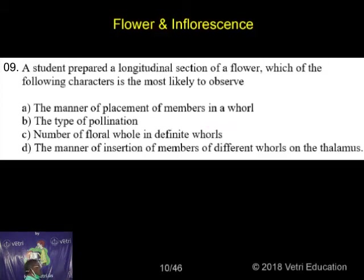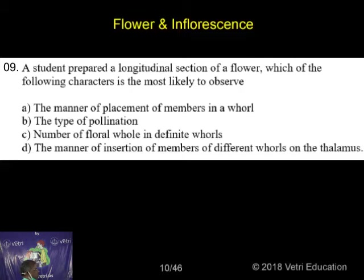A student prepared a longitudinal section of a flower. Which of the following characters is most likely to be observed? The manner of placentation of members in a whorl, the type of pollination, the number of floral whorls in a definite whorl, or the manner of insertion of members of different whorls on the thalamus.